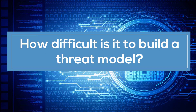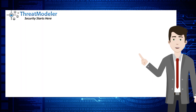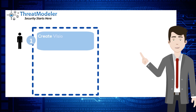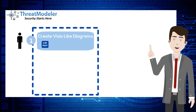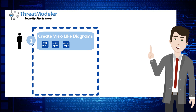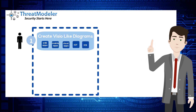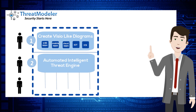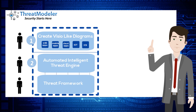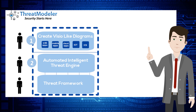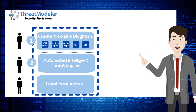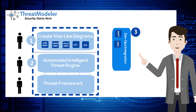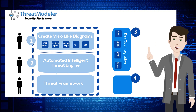How difficult is it to build a threat model? Not difficult at all — it is very easy. Here are the steps: you create an architecture diagram either using the wizard or predefined templates. Advanced users can even build something from scratch. ThreatModeler will use the automated intelligent threat engine against your architecture diagram and identify threats, security requirements, and test cases using our threat framework. The threat model integrates into your DevOps process.